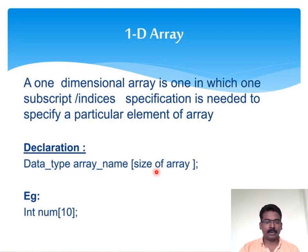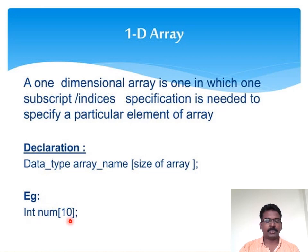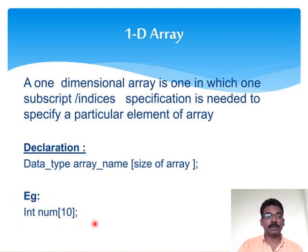Coming to the declaration of a one-dimensional array: the declaration starts with the data type, followed by the name of the array, followed by the subscript which declares the size of the array. For example, here we have declared an array named 'number' which is going to store integer data types and it is going to store 10 elements — meaning 10 integer elements are stored under the array named 'number'.